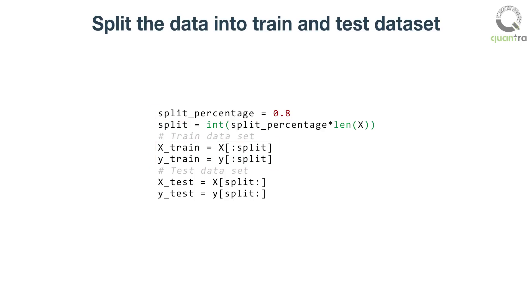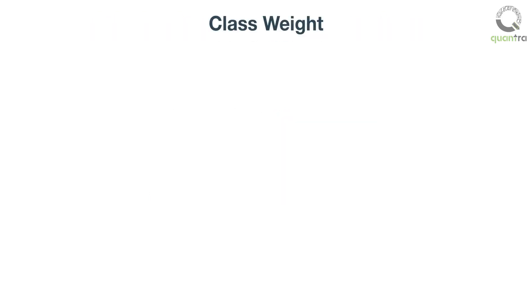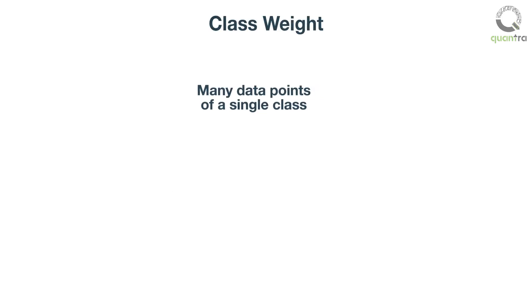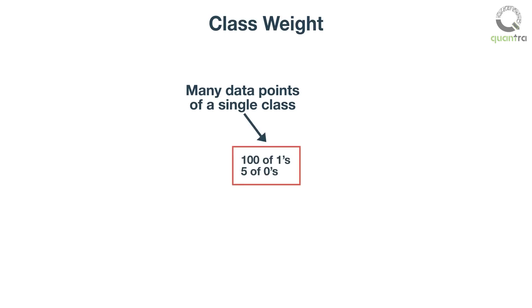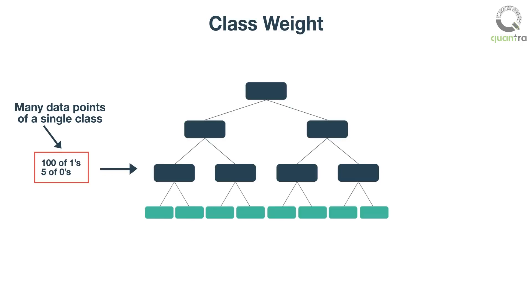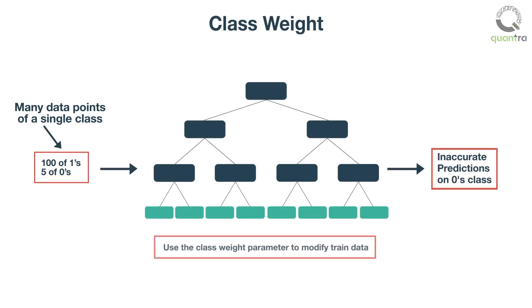The test feature matrix X_test and the target variable Y_test are the last 20%. Regarding class weight: it is possible that our target variable has too many data points of a single class — for example, 100 ones and only 5 zeros in Y, meaning too many positive returns and too few negative returns. If this data goes into the model, our model would not learn well since it would get skewed data with more ones than zeros. To avoid this, we modify the train data using the class weight parameter. You can learn more about this in the IPython notebook available in this section.